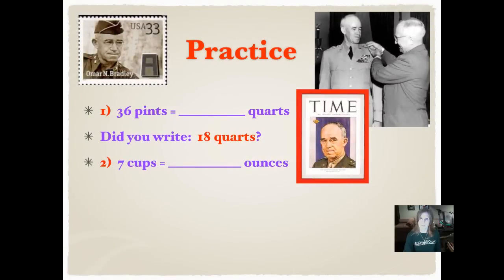Let's try another one. Number two, seven cups equals how many ounces? Remember, these are fluid ounces. Use your G chart to figure it out, and your big to little multiply, small to large divide. Pause it and push play when you're ready.